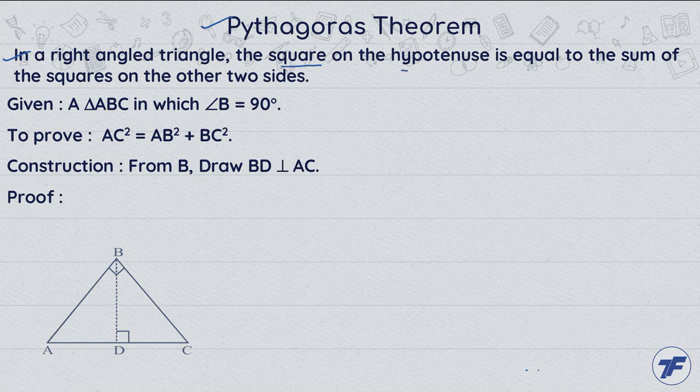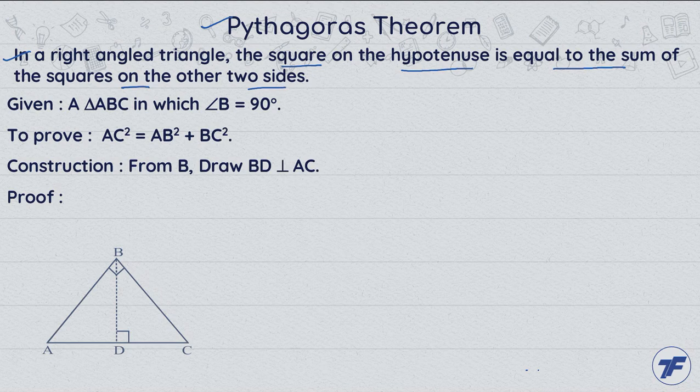the square on the hypotenuse is equal to the sum of the squares on the other two sides. Okay, let's prove this.